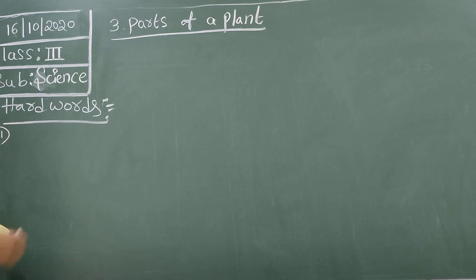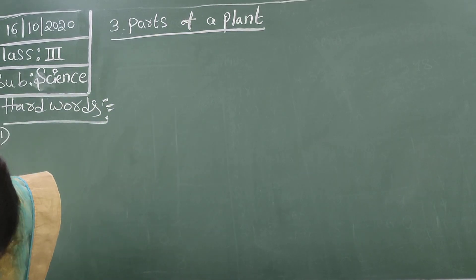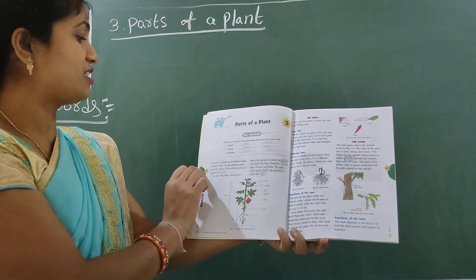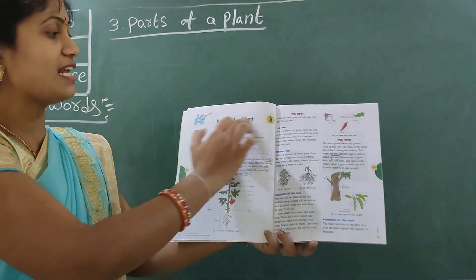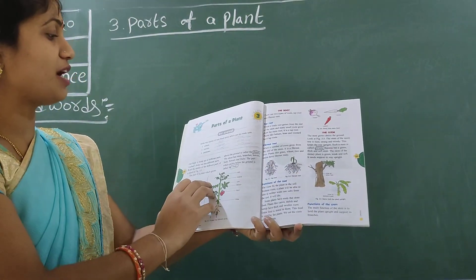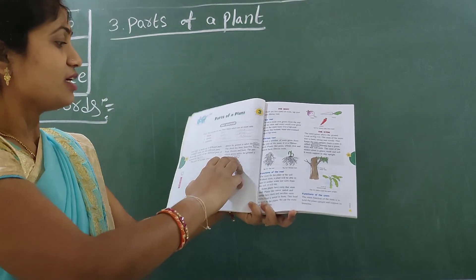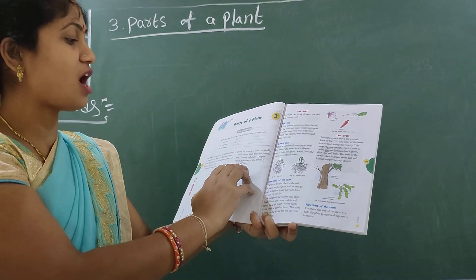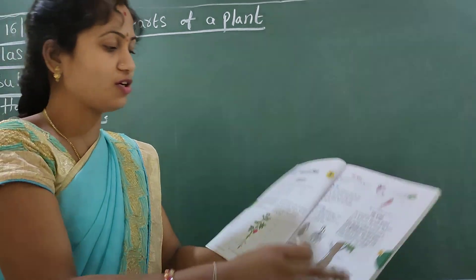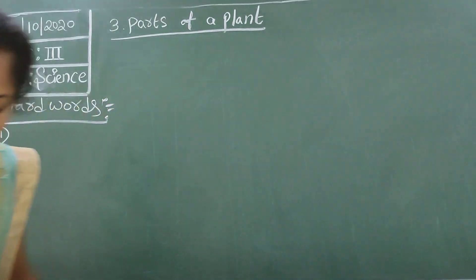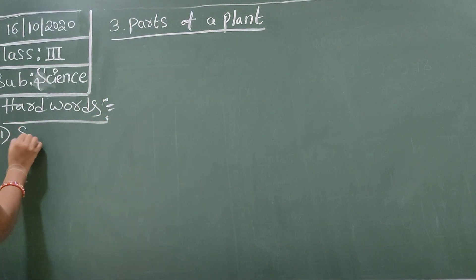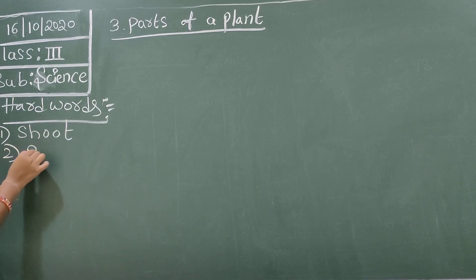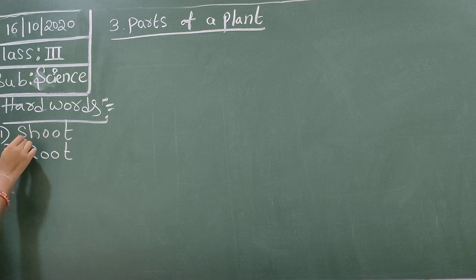First one - Shoot. You have to open page number 184. Circle the hard words. Shoot: S-H-O-O-T. Root: R-O-O-T. Like that, write them down. Shoot - S-H-O-O-T. Root. The first letter you have to write as a capital letter.